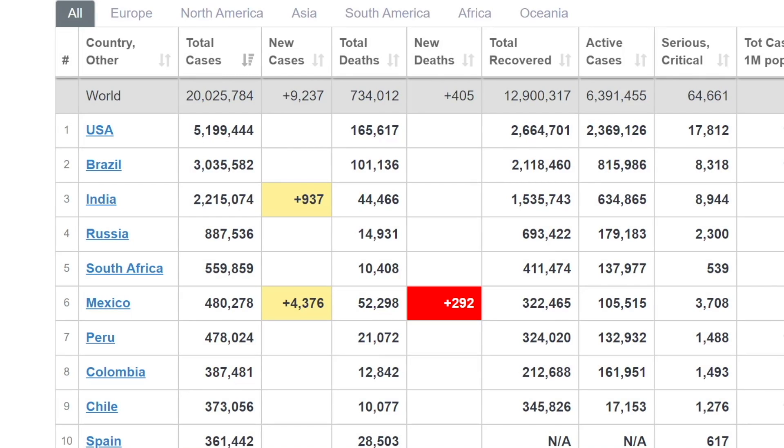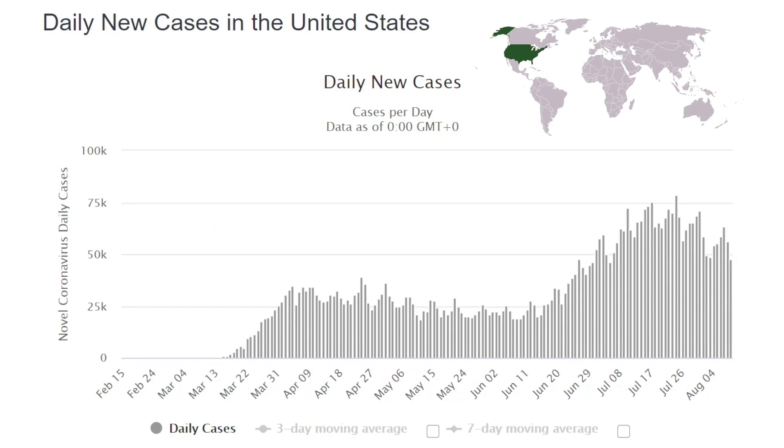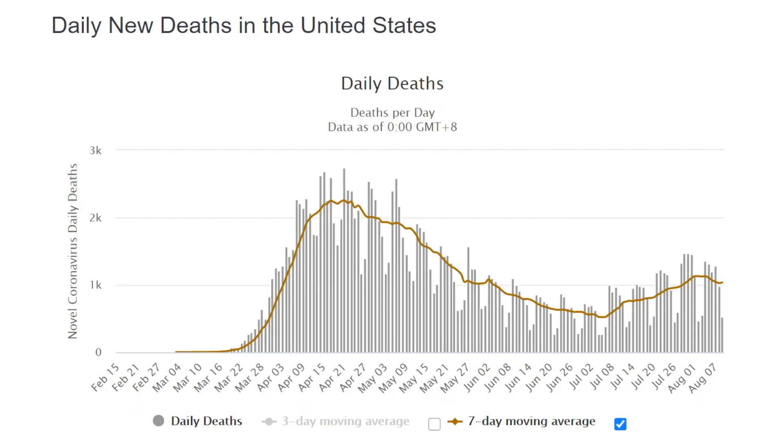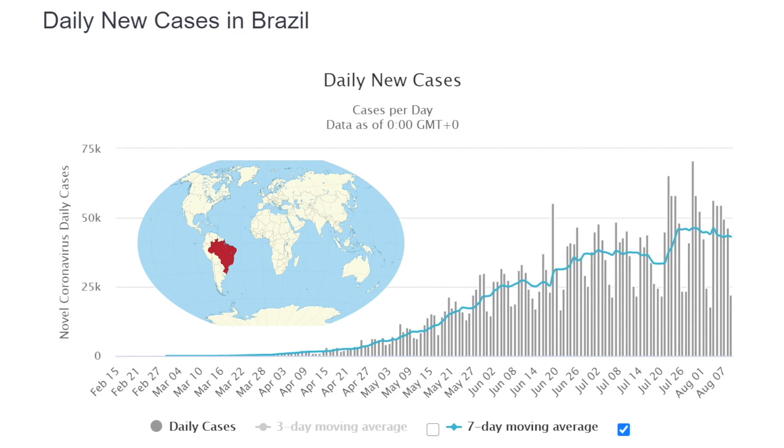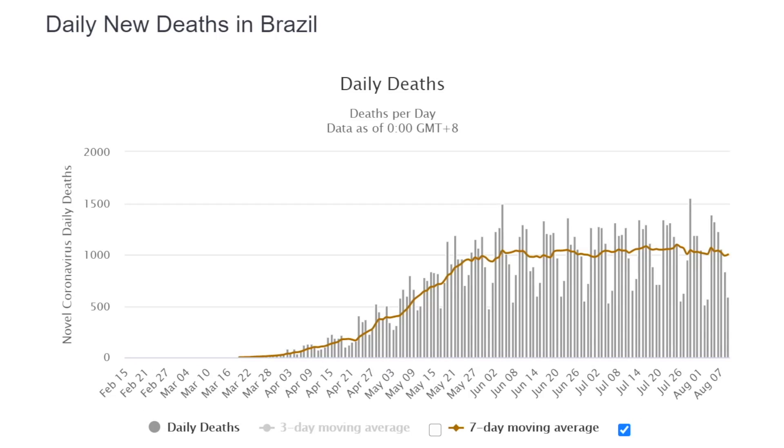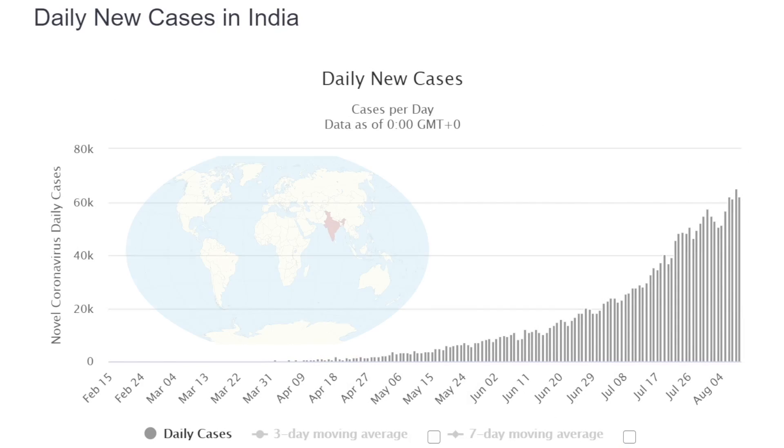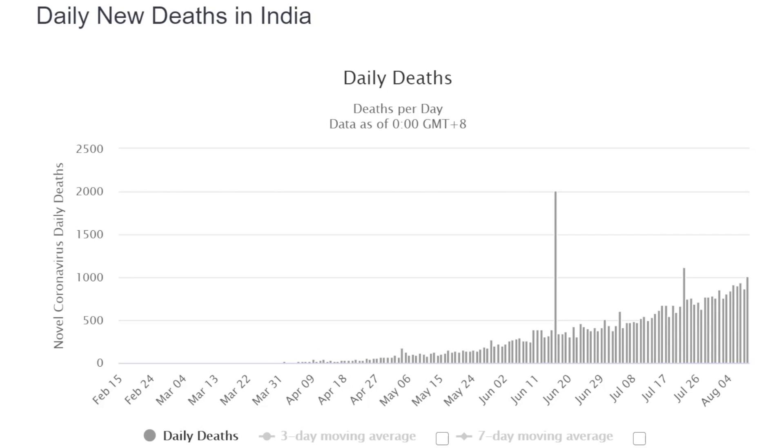Currently, the top three places around the world with infection are the United States, Brazil, and India. Each one is presenting a little bit differently. In the United States, daily new cases are slowly decreasing, while it seems daily new deaths may have peaked. It seems the daily new cases in Brazil have plateaued, as have the daily new deaths. Currently in India, the daily new cases continue to rise, as do the daily deaths.